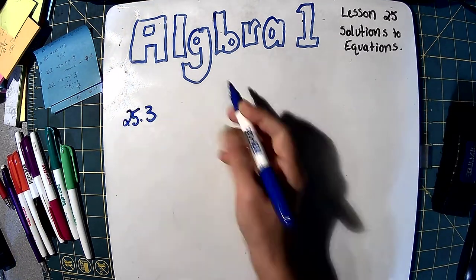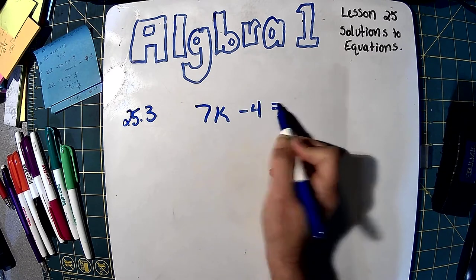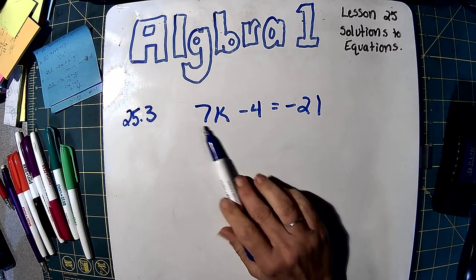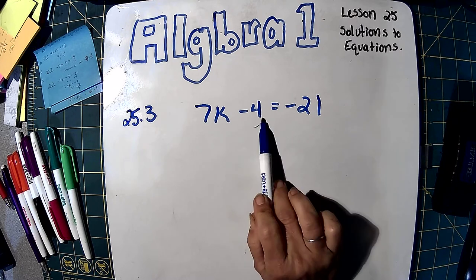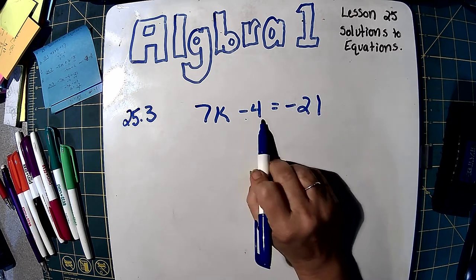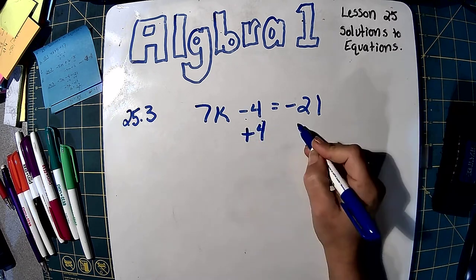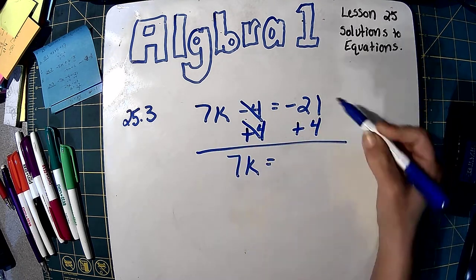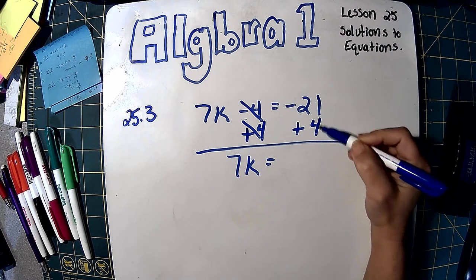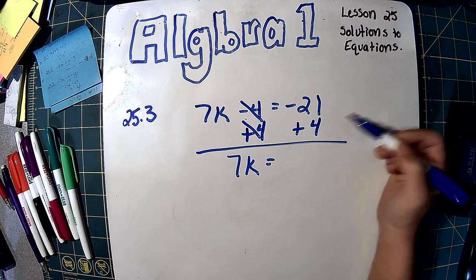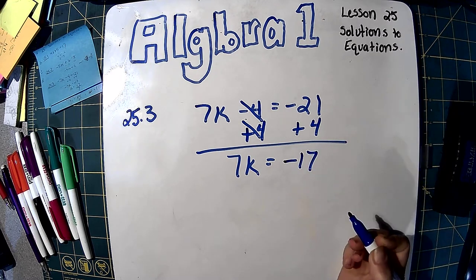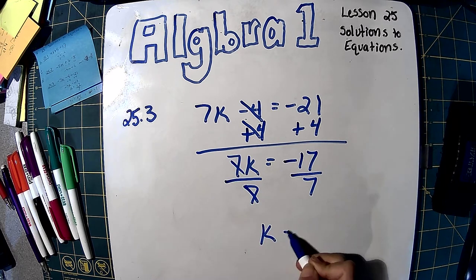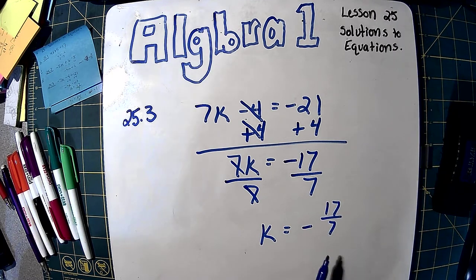25.3: 7k minus 4 equals negative 21. We've got to get rid of our addition and subtraction first. The variable is k and we look for any addition or subtraction. Right here we have negative 4, so we're going to do plus 4 on both sides. Those cancel and we're going to have 7k equals. We've got to be careful here — this is a negative and a positive, so we subtract. We owe $21, we pay back 4 of it, so we'll still owe $17. Now we divide by 7. Those cancel and we get k equals negative 17 over 7. You can just leave it as an improper fraction.